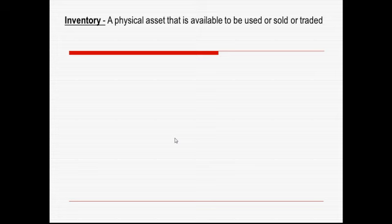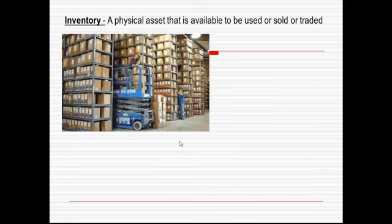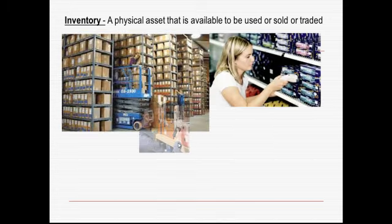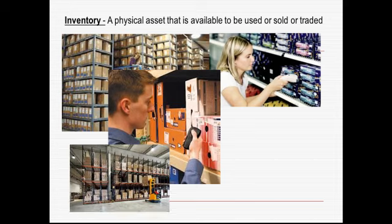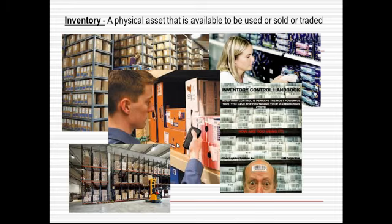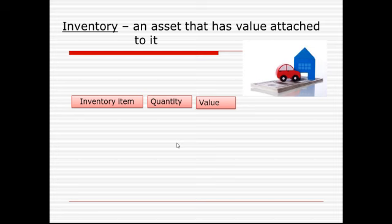First of all, inventory is a physical asset that is available to be used, sold, or traded. When you go into stores, you'll see a lot of inventory that they sell. Businesses have inventories, and inventory is an asset that has value attached to it.